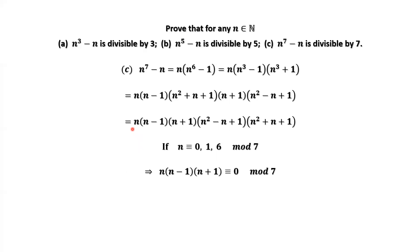We consider the product of the first three factors. If the remainder of N is 0, we replace N by 0, so the product is divisible by 7. If the remainder of N is 1, then N minus 1 has remainder 0, so the product of the three numbers is divisible by 7. If the remainder is 6, then 6 plus 1 is 7, which is divisible by 7. Therefore, for these three situations, N to the power of 7 minus N is divisible by 7.